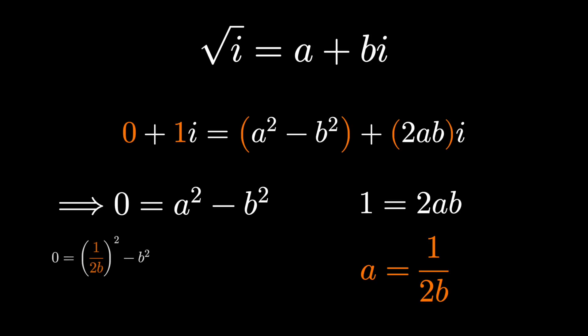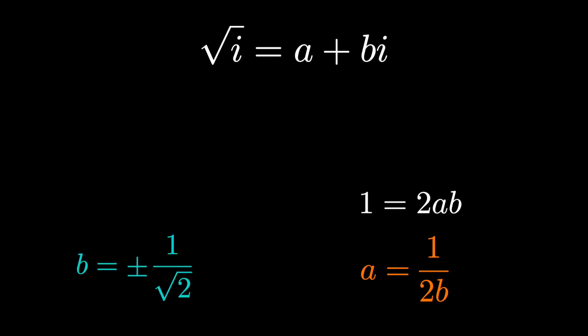Then we can plug in for a. So 1 over 4b squared minus b squared is 0. Which means 1 minus 4b to the 4th equals 0. Or that b to the 4th equals 1 4th. Or that b is plus or minus 1 over root 2.